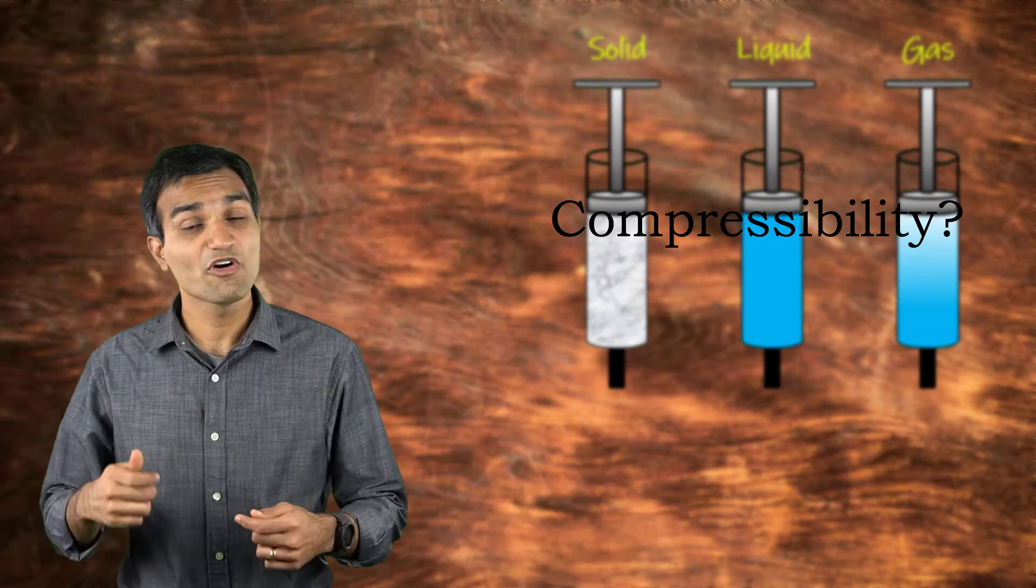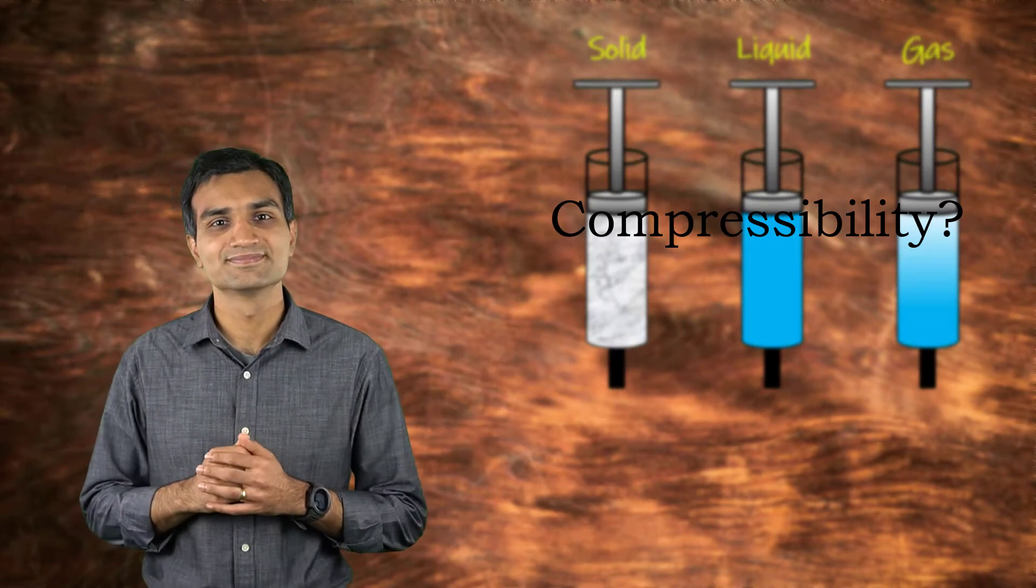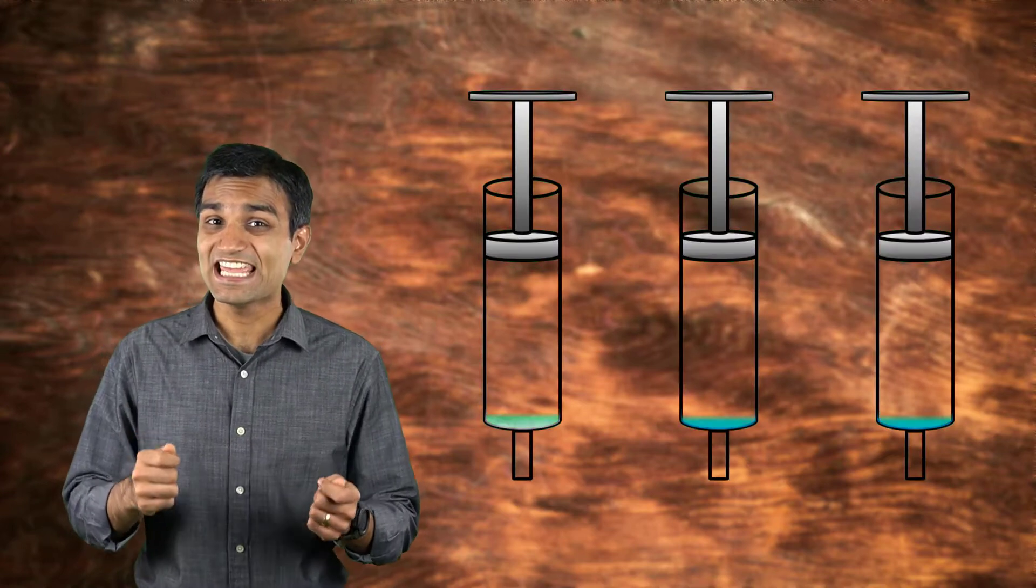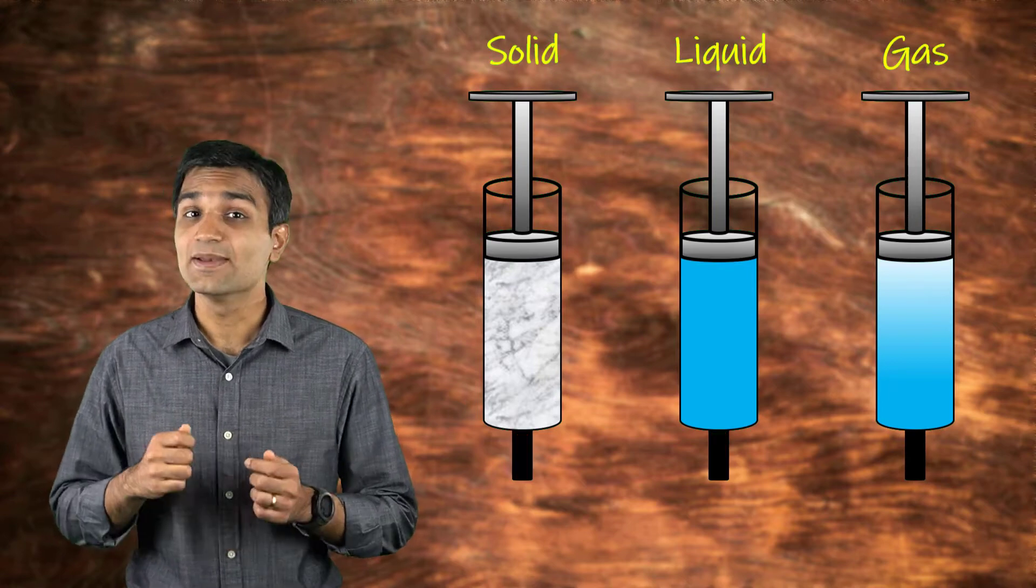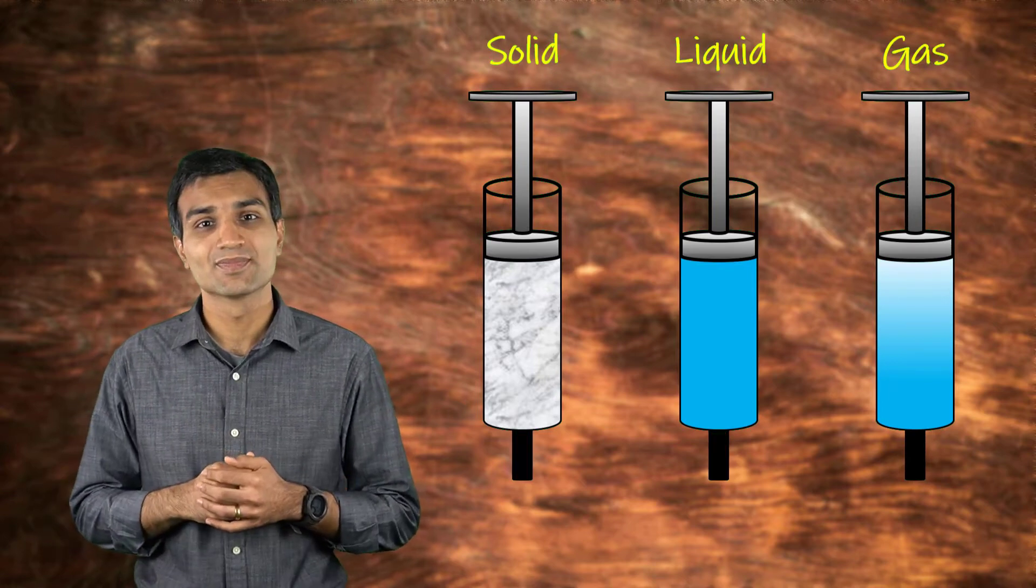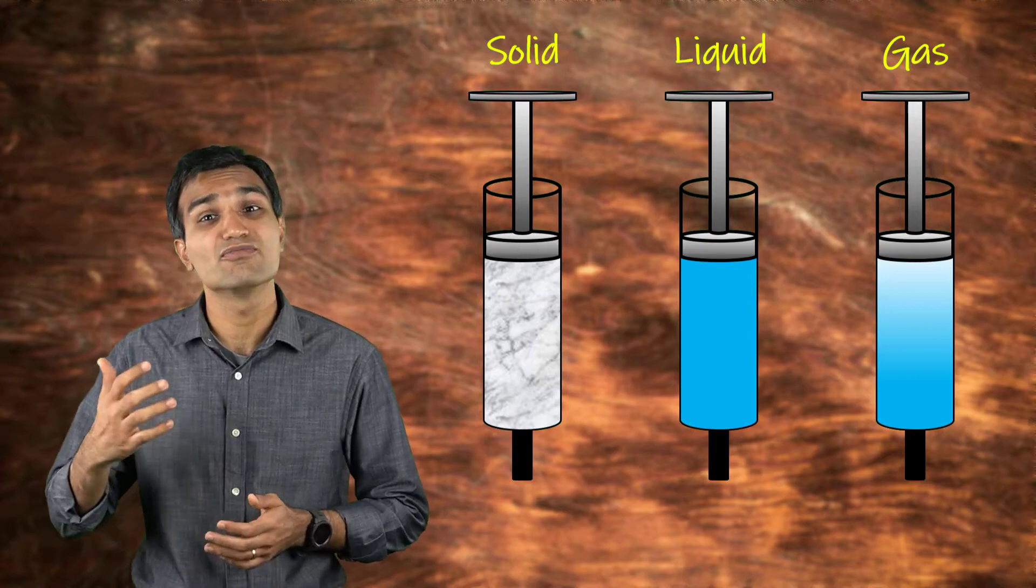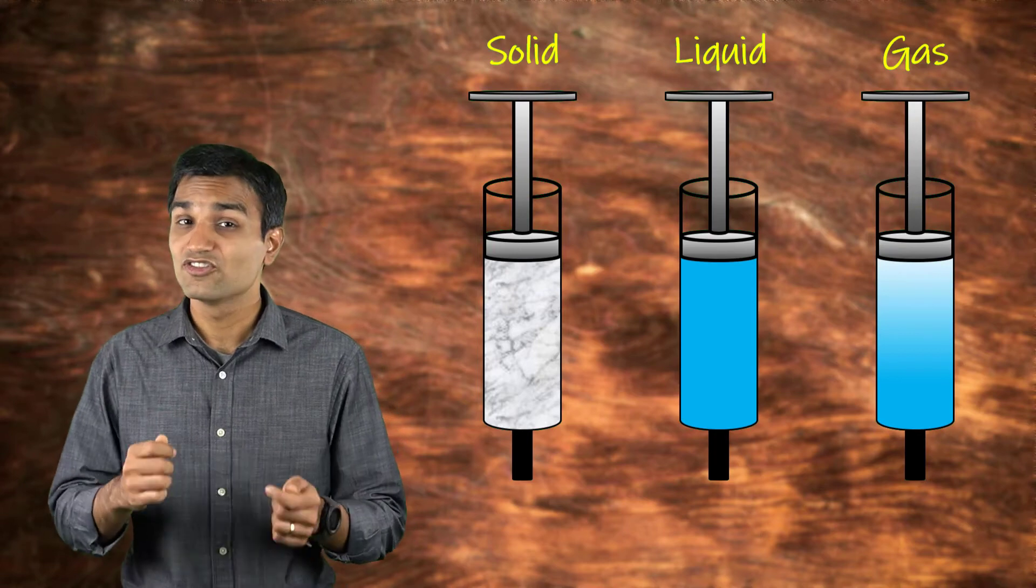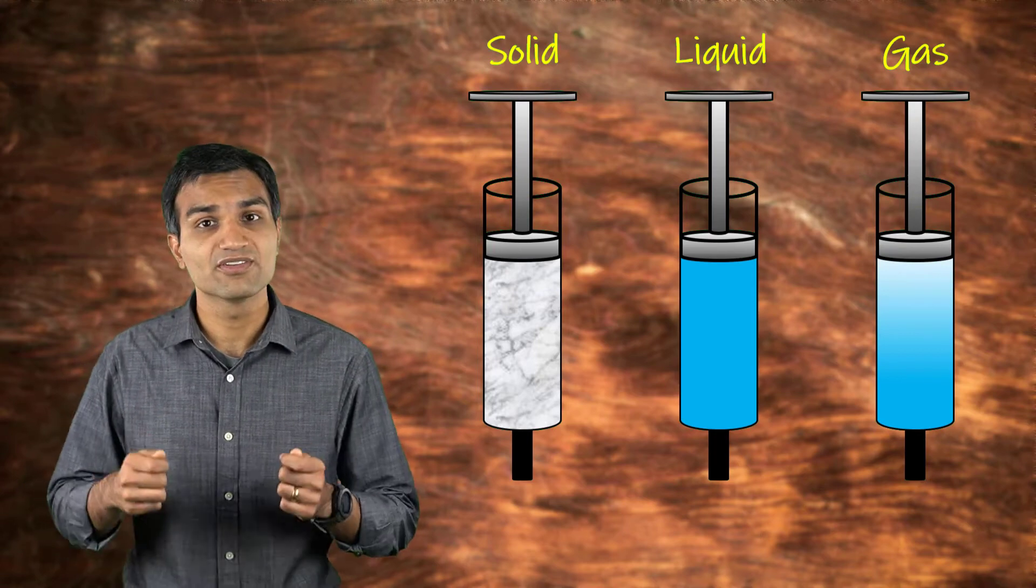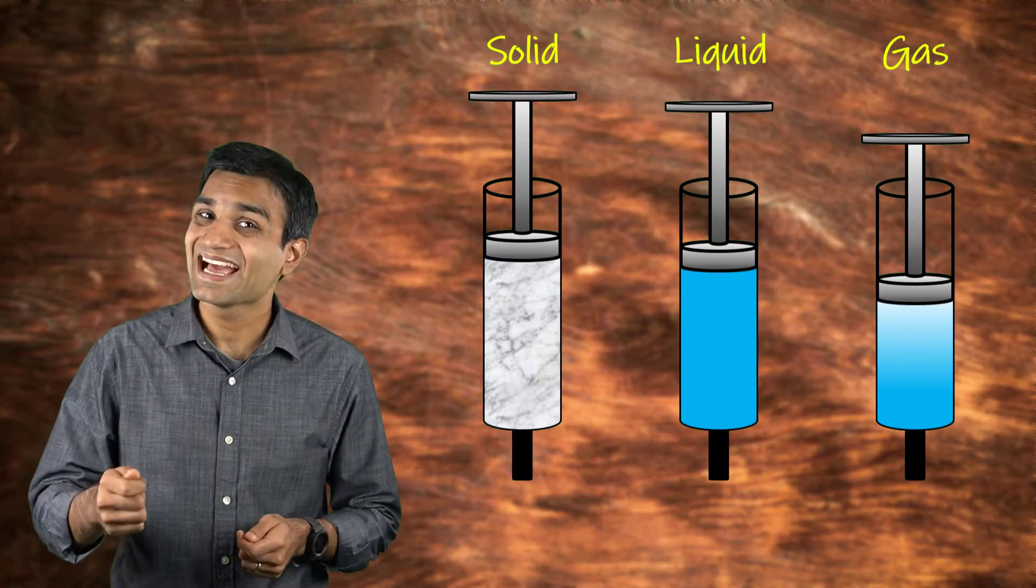When you think of compressibility, what kind of matter do you think of? Fill three syringes each with a solid, liquid, and gas. Cap their nozzles and push on the plunger. What do you think will happen to each of these three phases of matter when pressure is applied? The solid and liquid probably resist your push on the plunger a lot more than the gas does.